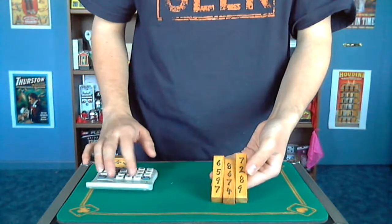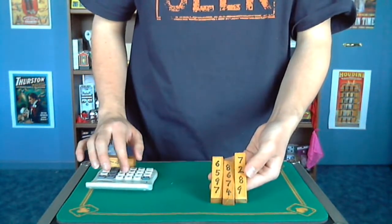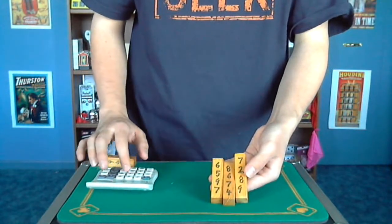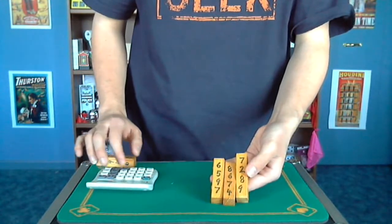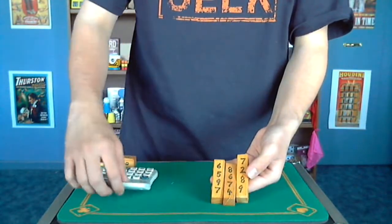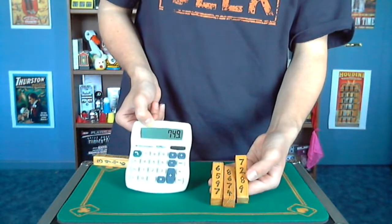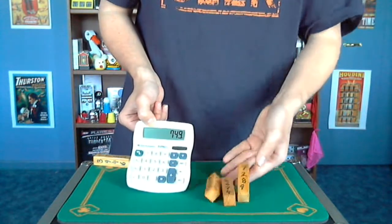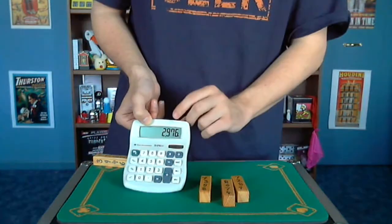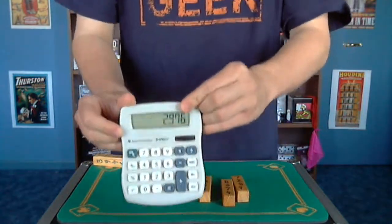So we're going to go 687 plus 562 plus 978 plus 749. Now I'm not going to hit equals yet, but it's going to be 2,976. Let's see if I'm right. 2,976.